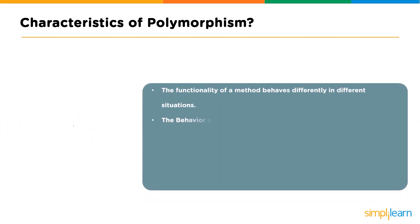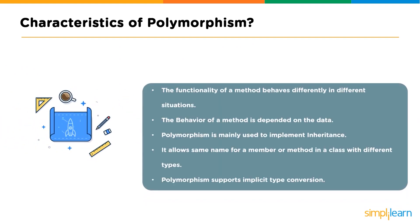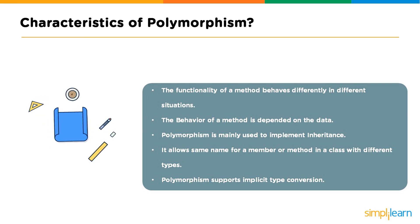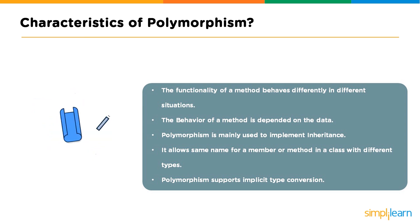Characteristics of polymorphism: the functionality of a method behaves differently in different situations; the behavior of a method is dependent on the data; polymorphism is mainly used to implement inheritance — as we saw, we did the extends with AnimalSounds; it allows the same name for a method in a class with different types; and polymorphism supports implicit type conversion.